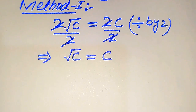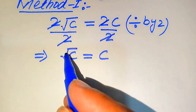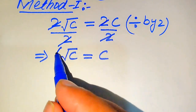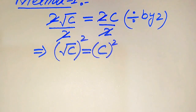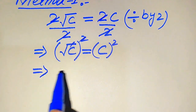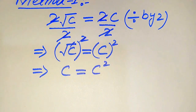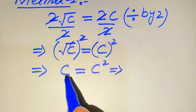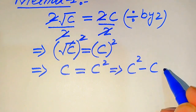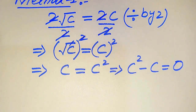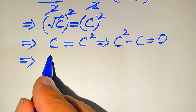Our target is to find the values of C, so we need to remove the square root sign from the left-hand side by squaring both sides. When we square both sides, the square root is removed and we get C equals C squared.